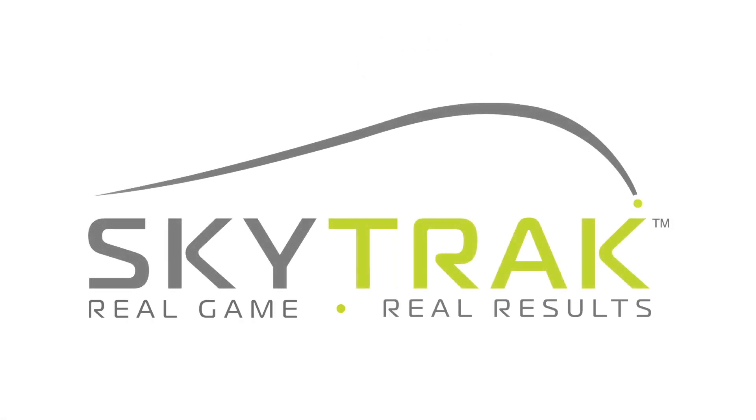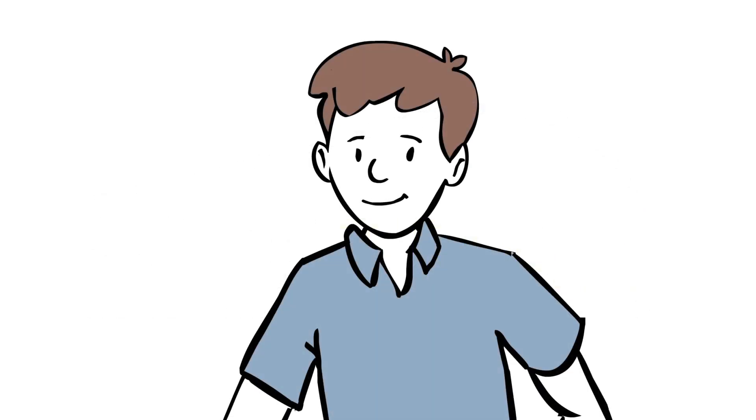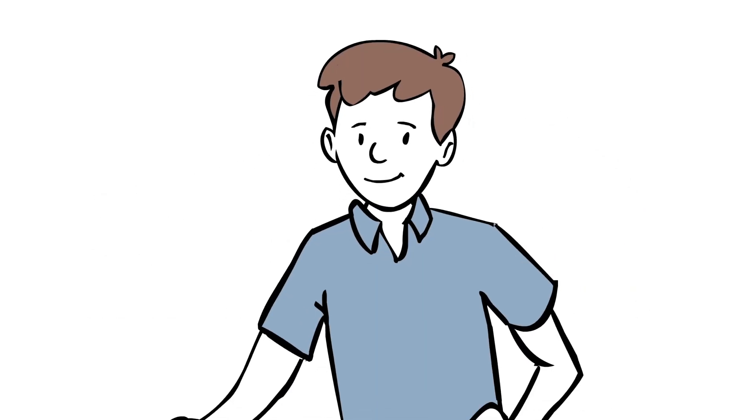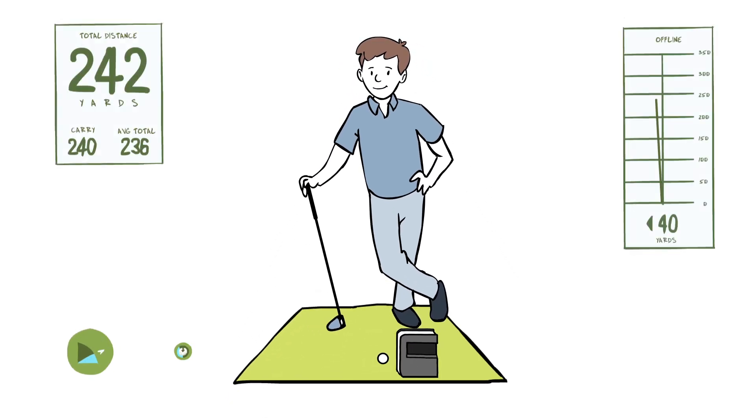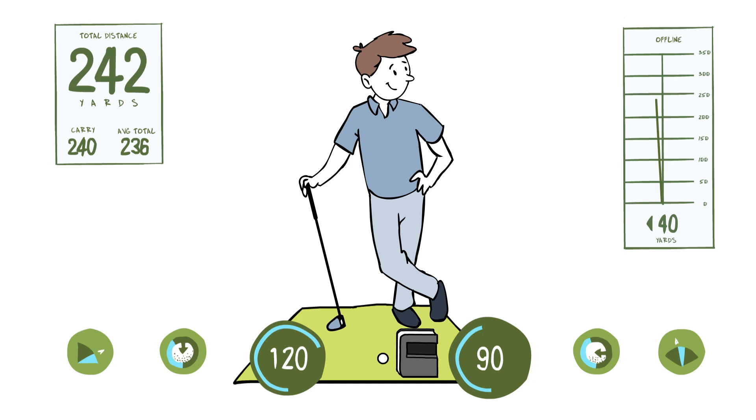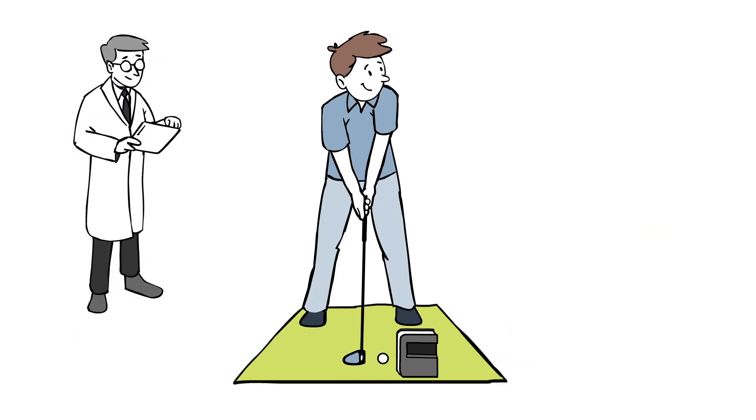SkyTrack is a personal launch monitor that provides accurate launch data for golfers of all skill levels. With every shot you hit, the system collects quality data that helps identify strengths and weaknesses in your game. You get to see your numbers and know when you've hit a good shot, or a great one.